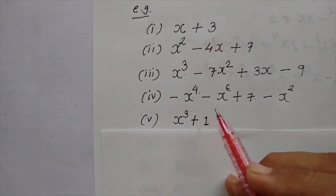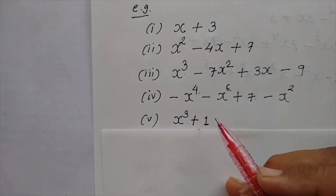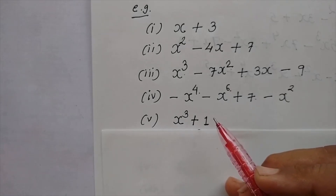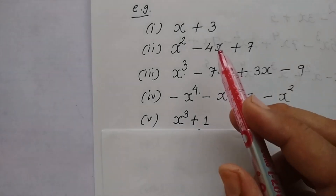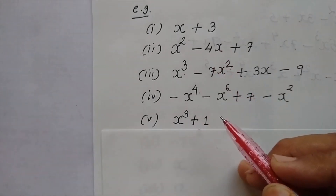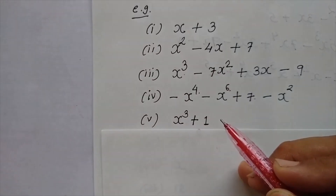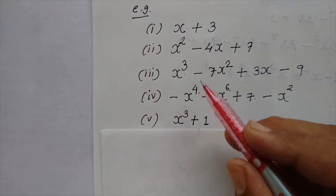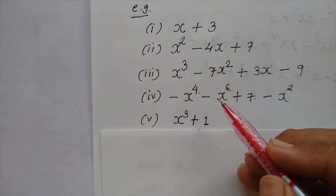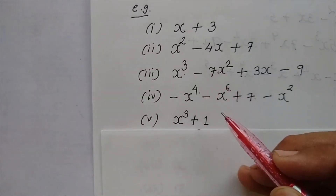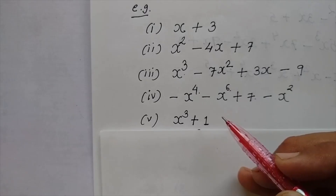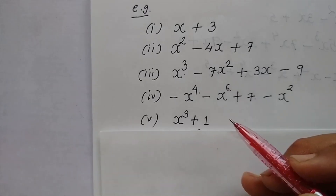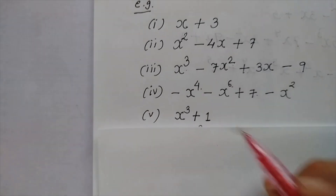Let us take one more example, x cube plus 1. So children, these are the examples of polynomial. Now, before we start other topics, first of all, we must understand some terminologies related to this chapter, polynomial.